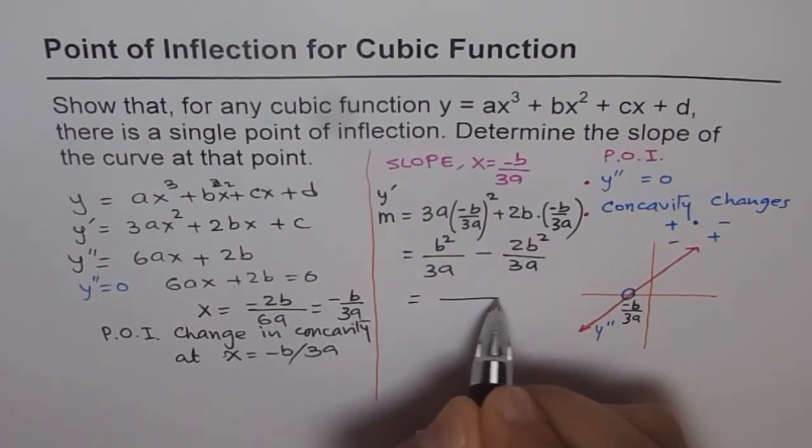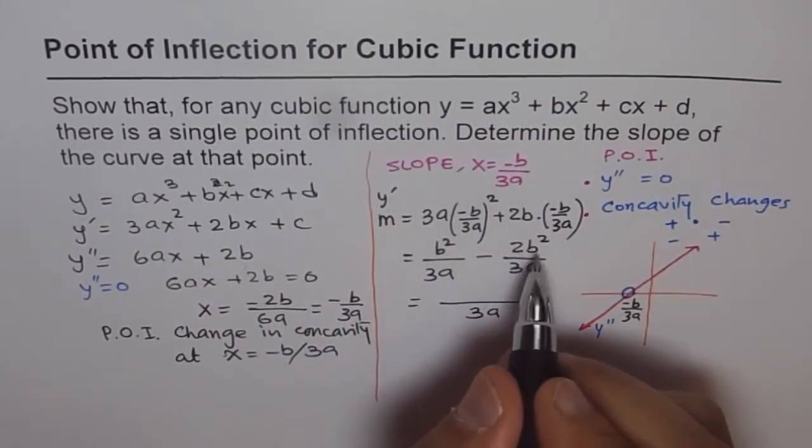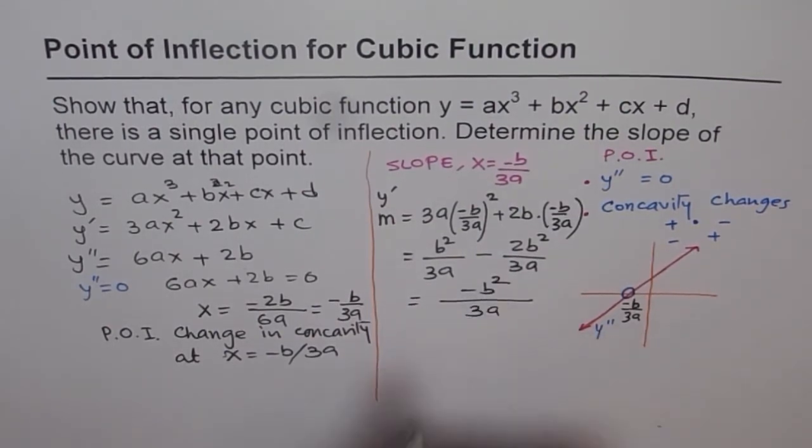3a is common. So we can write 3a in the denominator. And we get b² minus 2b², which is minus b².